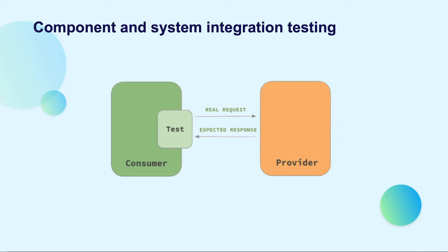As mentioned, each test level has its own objective. Integration testing helps ensure the effective interaction between internal and external services, whereas unit testing verifies individual services or functions. However, integration testing requires high effort since you have to merge related elements and deploy them on a test environment, and this is true for both manual and automated testing.